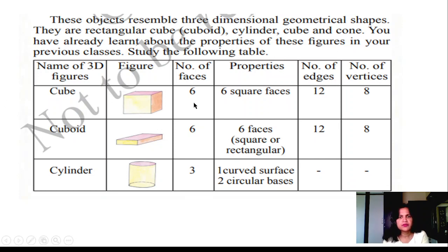Cube. This figure is like this. Number of faces: 6 square faces. Number of edges: 12. Number of vertices: 8. Vertices means the points, corner points are called the vertices. Edges means sides. 1, 2, 3, 4, like this, 12 sides. One face has 4 sides. It has 6 faces, 6 into 4.